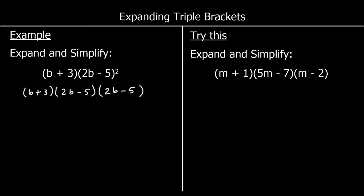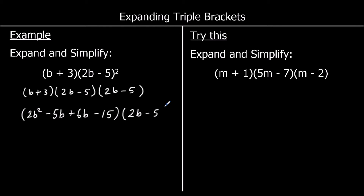So let's do the first two brackets and leave the last bracket. b times 2b is 2b squared. b times negative 5 is negative 5b. 3 times 2b is 6b. 3 times negative 5 is negative 15. And the other bracket is still there. Collecting like terms: negative 5b plus 6b is just b. So we've got 2b squared plus b minus 15.